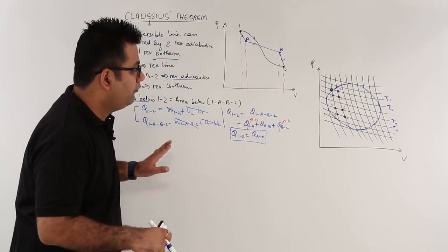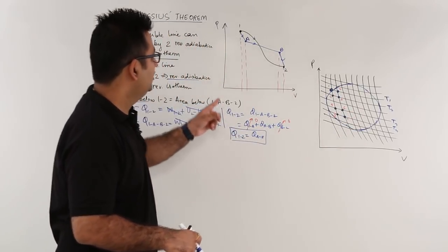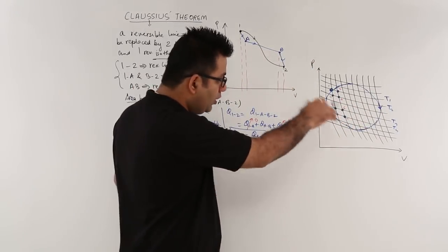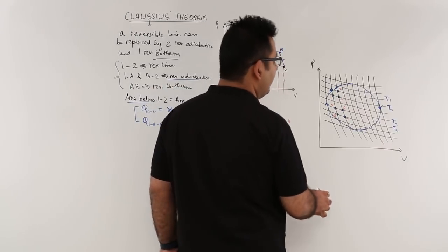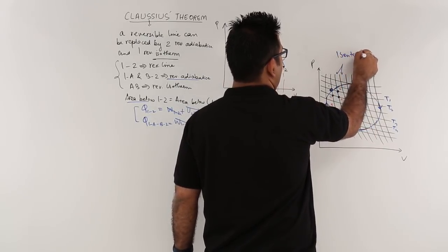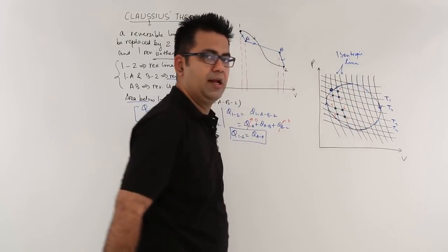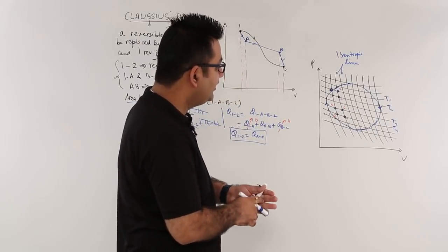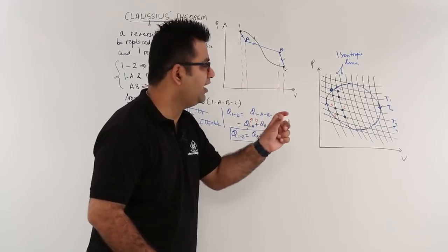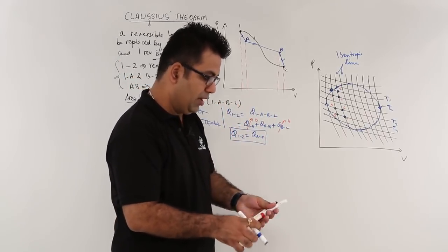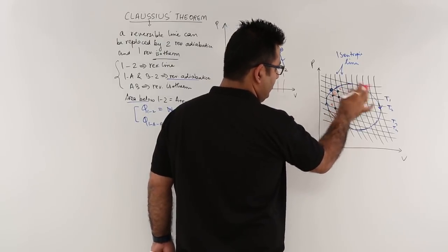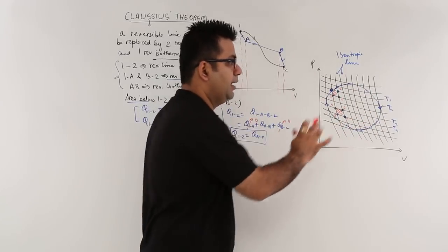Now let us take this analysis forward and create an entire cycle out of it. We have an entire reversible cycle shown in the blue line, with almost vertical lines representing reversible adiabatics (isentropic lines) and almost horizontal lines representing isotherms. We can divide this into very small reversible Carnot cycles — each small segment of the blue cycle corresponds to one such elementary Carnot cycle.